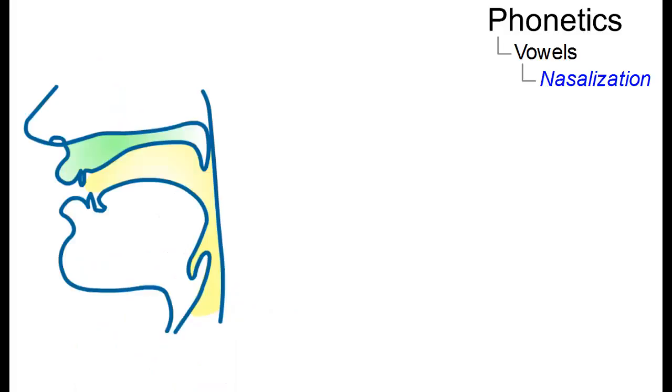Normally, in all vowels the velum is raised so that there is a velic closure and air does not flow out through the nose. Such vowels, for example the vowel, are referred to as oral vowels.